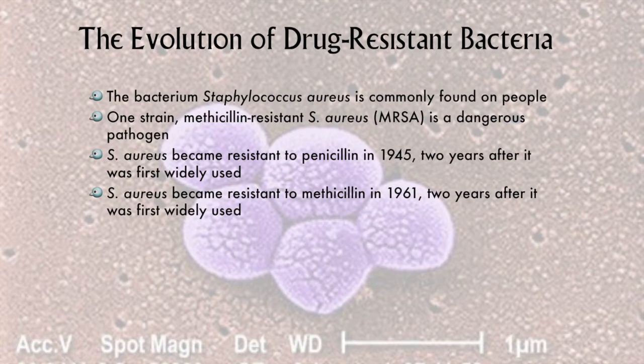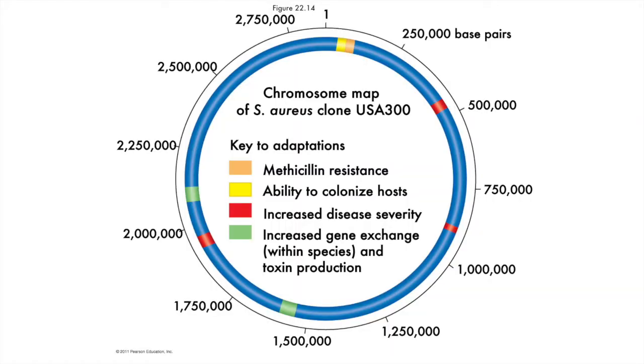This behavior in bacteria was actually predicted by Alexander Fleming in his Nobel Prize acceptance speech for the discovery of penicillin. New antibiotics were and are still being developed. Another one, methicillin, was introduced in 1959. Again, two years of miraculous success in treatment — then, again, resistant strains began appearing that could not be treated with methicillin or penicillin. We have been able to sequence the entire chromosome of Staphylococcus aureus and identify genes that enable the bacteria to resist antibiotics such as methicillin.